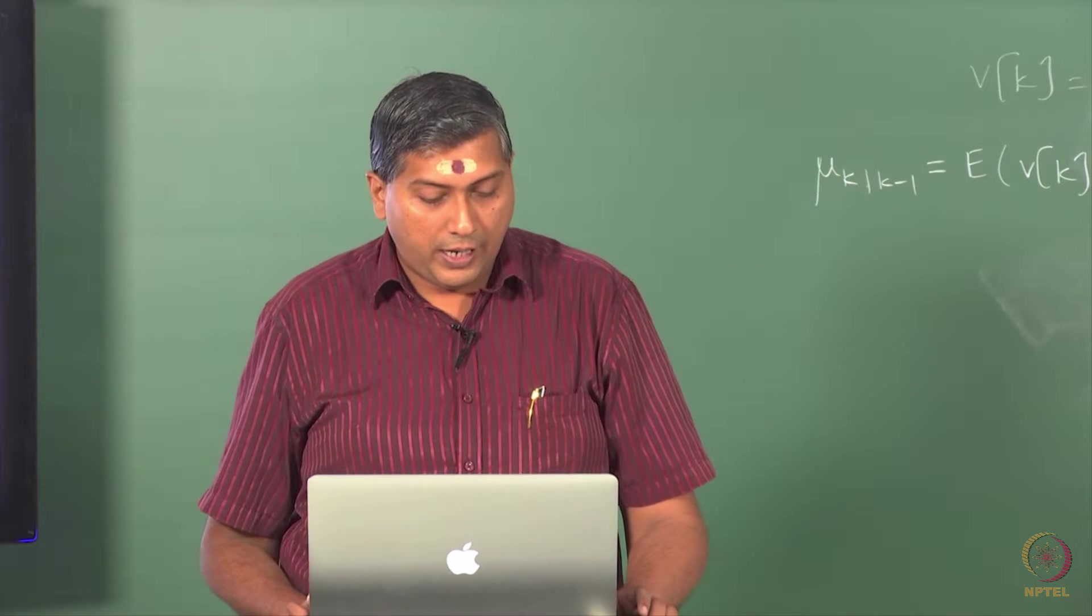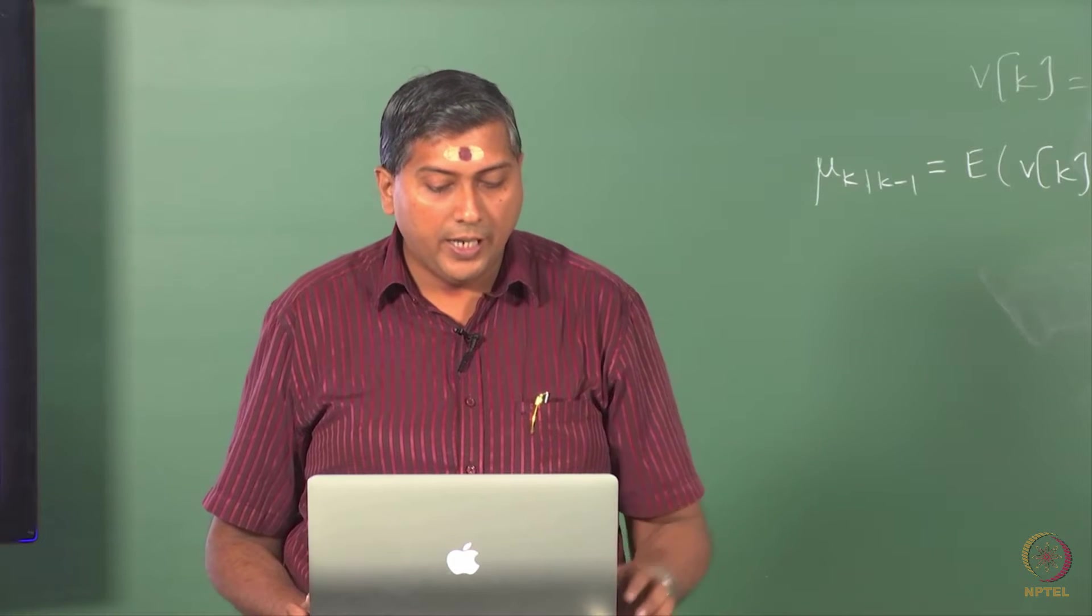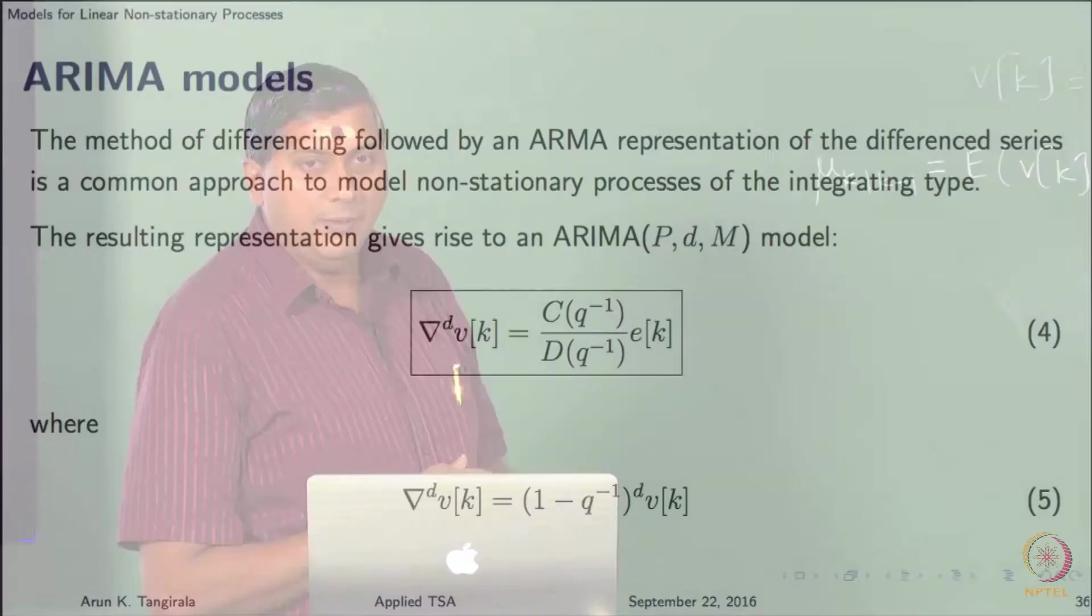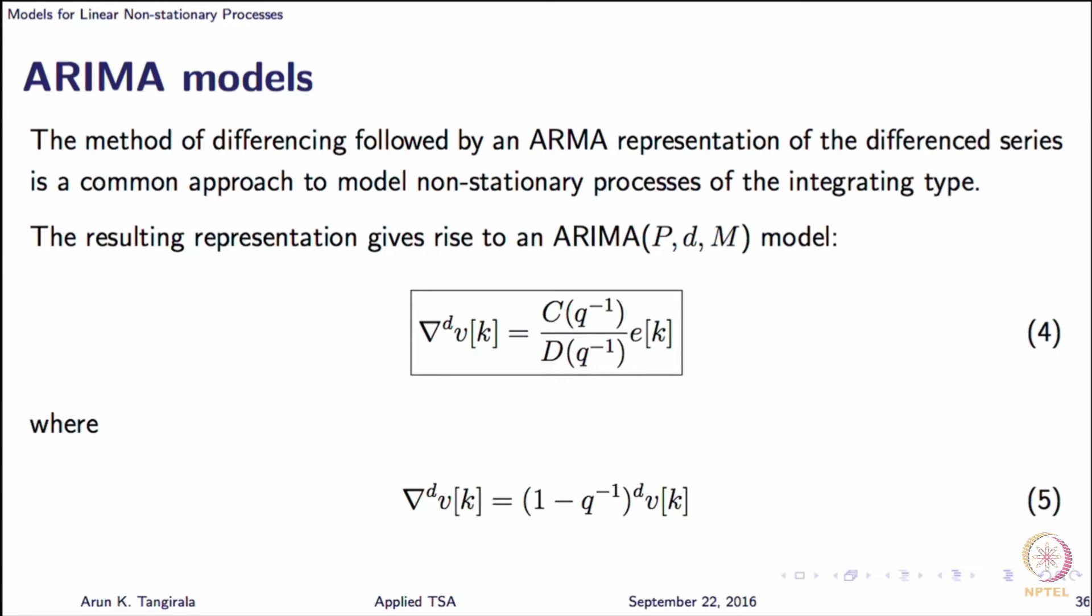Obviously, how do you handle the integrating process? Well, as I said through the differencing operation. And together when you plug, when you put together the integrating effect along with the stationary one, a multiplicative model is born. An ARIMA model is born where we say an ARIMA model of order P, D, M is an ARIMA model on a series that is differenced D times. That is another way of looking at an ARIMA model. That is, if I difference the series D times, then I end up with a stationary and invertible series for which I can fit an ARIMA model of orders P and M. That is a very easy way of understanding.